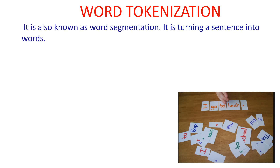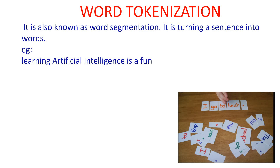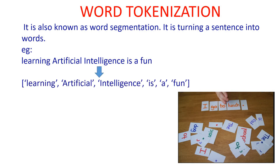Further, those sentences have to be broken into words — this is also known as word segmentation, turning sentences into words. For example, take the sentence 'Learning artificial intelligence is fun.' This single sentence is converted into a list of all the individual words in it.